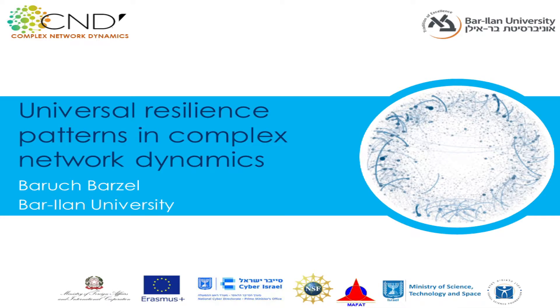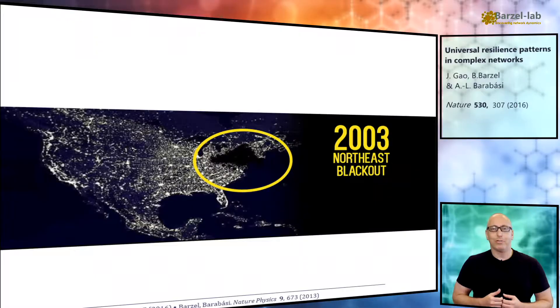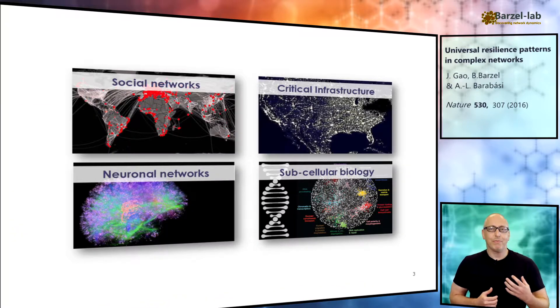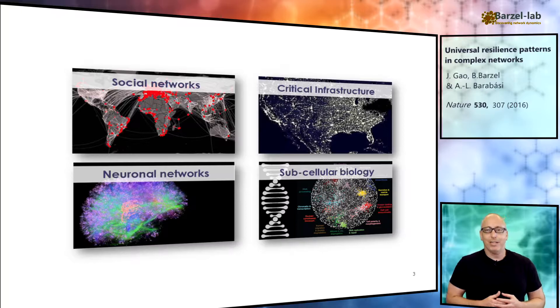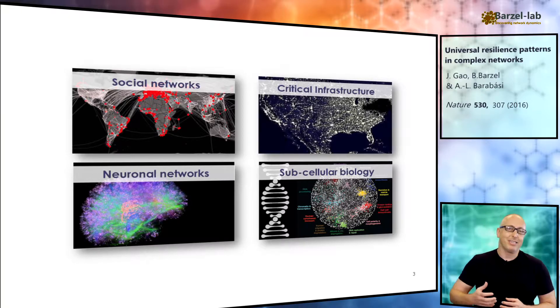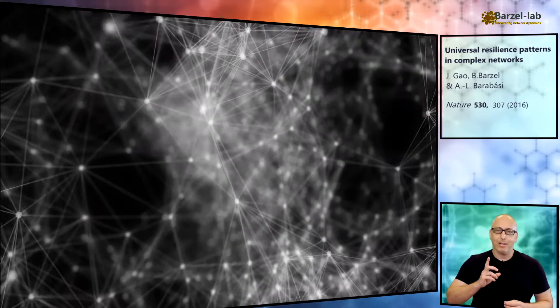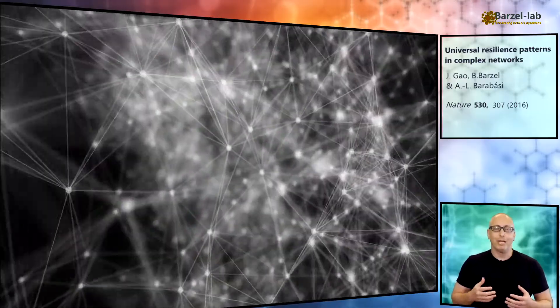In 2003, a local failure in South Canada propagated to become one of the largest blackouts in history. This illustrates the potential vulnerability of our critical infrastructure, but more broadly, it shows how difficult and often how unexpected are network failures. You have hundreds of local disturbances that seem to do nothing, but then one unlucky occurrence leads to a major breakdown.